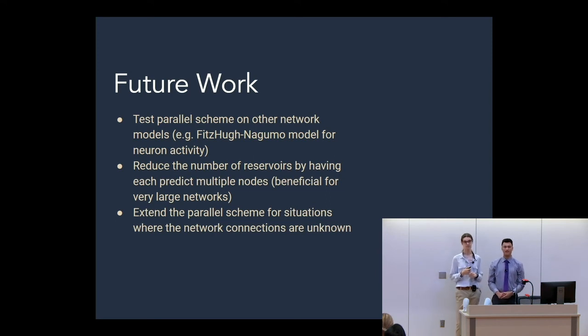And then lastly we hope to extend the scheme for situations where we don't know the network connections. Currently we know which nodes are connected to each other. Our preference would be to simply have 50 oscillators with no known connections and use an approach to connect them preferentially.